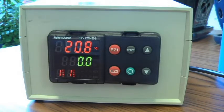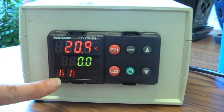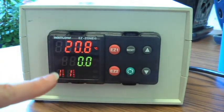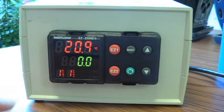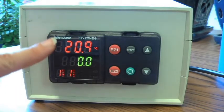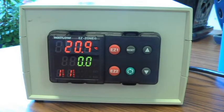The Watlow Easy Zone Control has a lot of information displayed on this panel, and all of the buttons you'll need to use to interface are right here in the front as well. The first thing you should know is that the upper display is the process temperature.